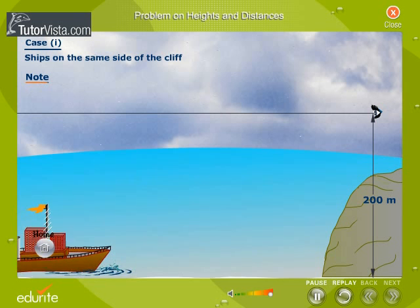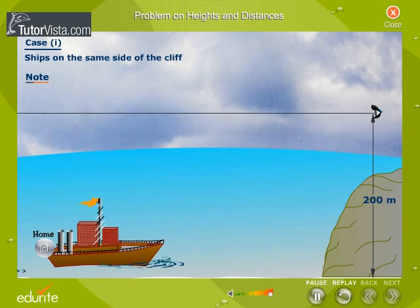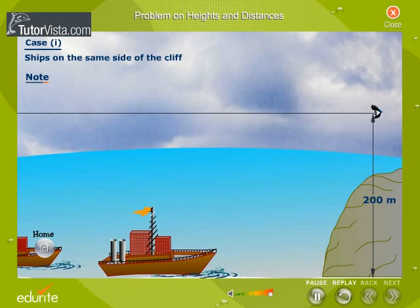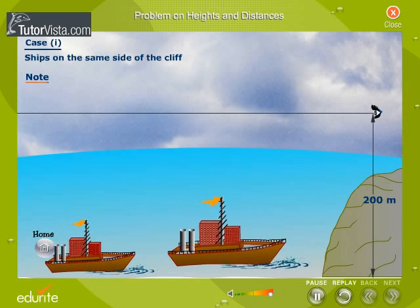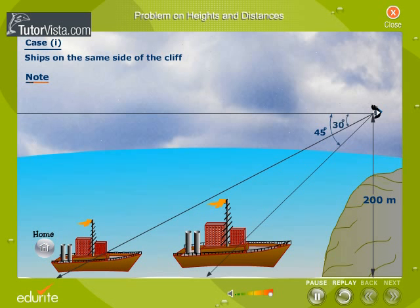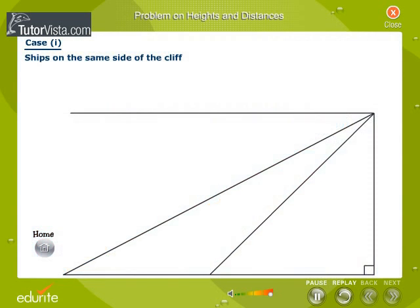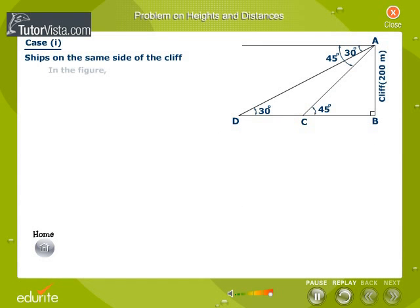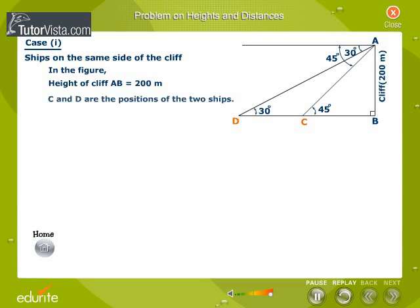The first case: ships on the same side of the cliff. Solution — observe the picture carefully. In the figure, cliff AB is equal to 200 metres. C and D are the positions of the two ships. It is required to find the length of CD, that is, the distance between the two ships.